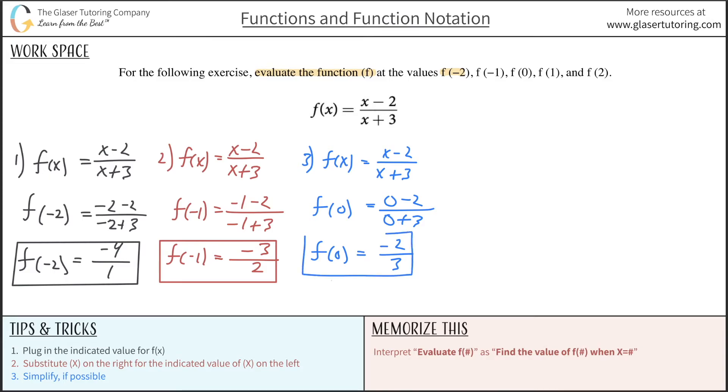If you notice, the numerator and denominator are changing by a constant value. The numerator is going up from negative 4 to negative 3 to negative 2, increasing by 1. The denominator is also increasing by one unit. We basically know what the other ones are going to work out to be, because each x value is changing a constant amount. So I can make that extrapolation.